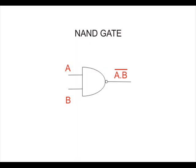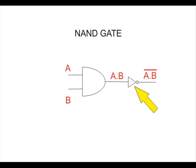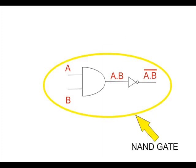Let us discuss about the logical NAND gate. When the output of an AND gate is inverted through a NOT gate, the operation is called NAND operation. The logic gate which performs this NAND operation is called a NAND gate.